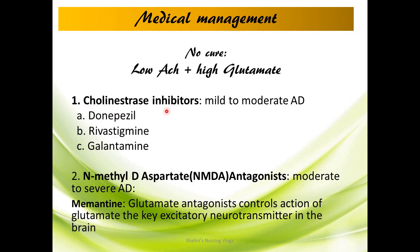So we give cholinesterase inhibitors — donepezil, rivastigmine, and galantamine — which inhibit the acetylcholinesterase enzyme that would otherwise destroy the acetylcholine. There is no cure for Alzheimer's disease; these patients have low acetylcholine and high glutamate. We can only treat symptomatically by increasing acetylcholine and decreasing glutamate. To decrease glutamate we give memantine, an N-methyl-D-aspartate antagonist, which controls the action of glutamate, a key excitatory neurotransmitter. These drugs can arrest the progression of the disease or prevent the patient from going into complications.